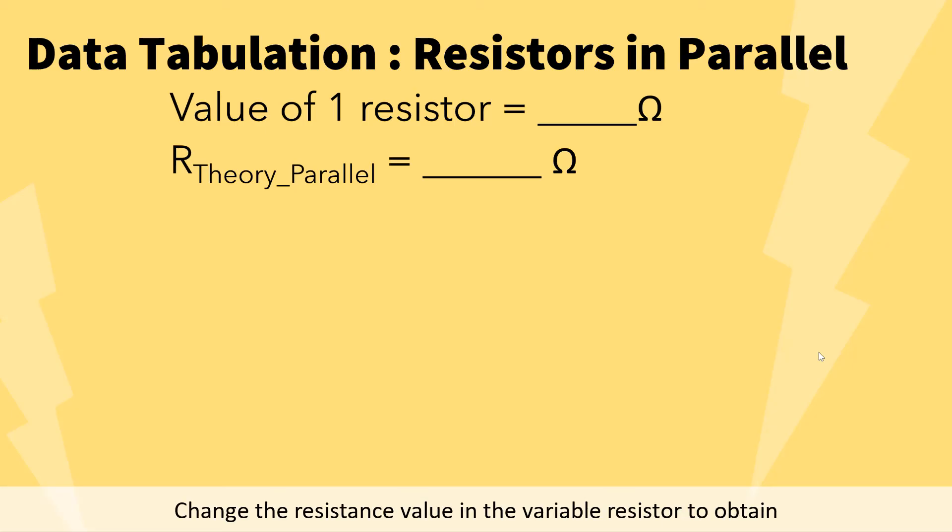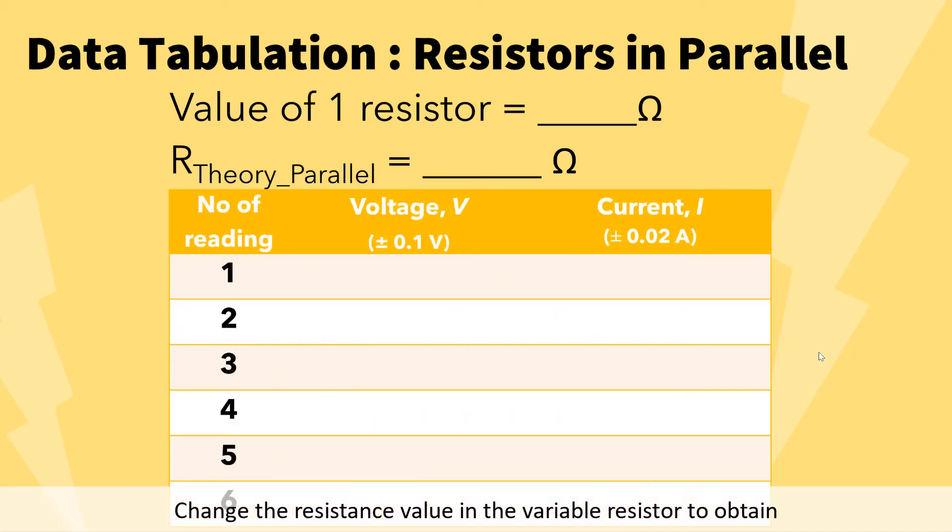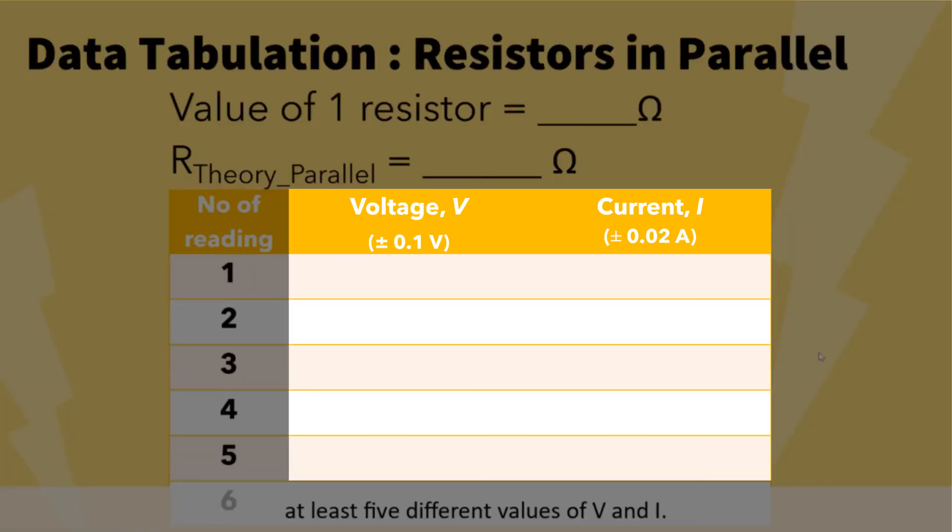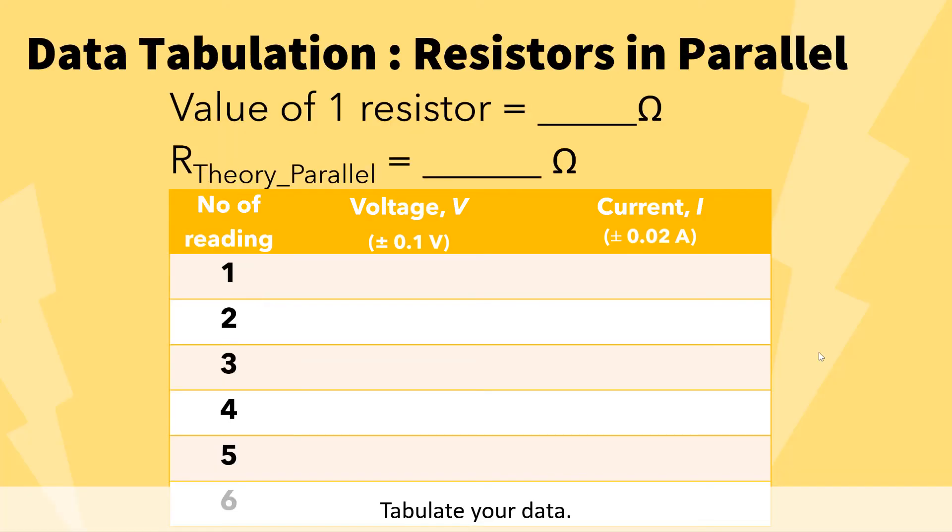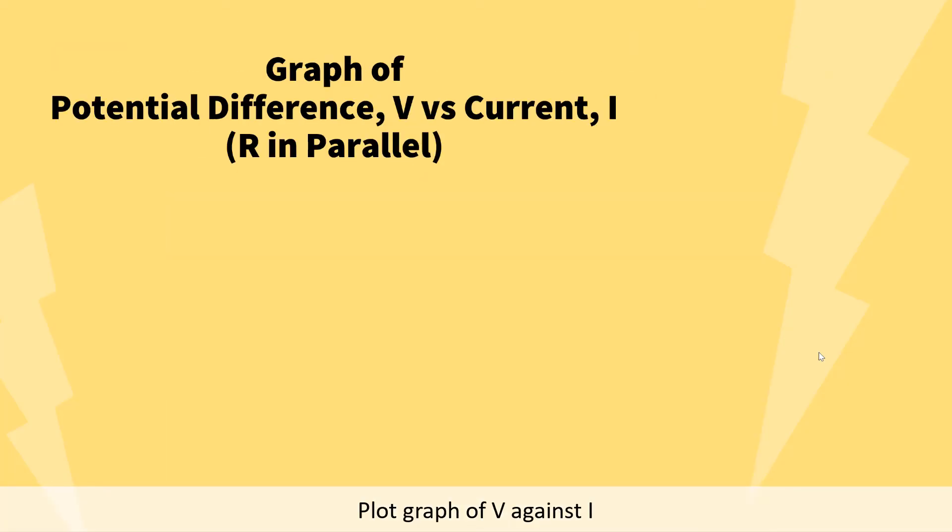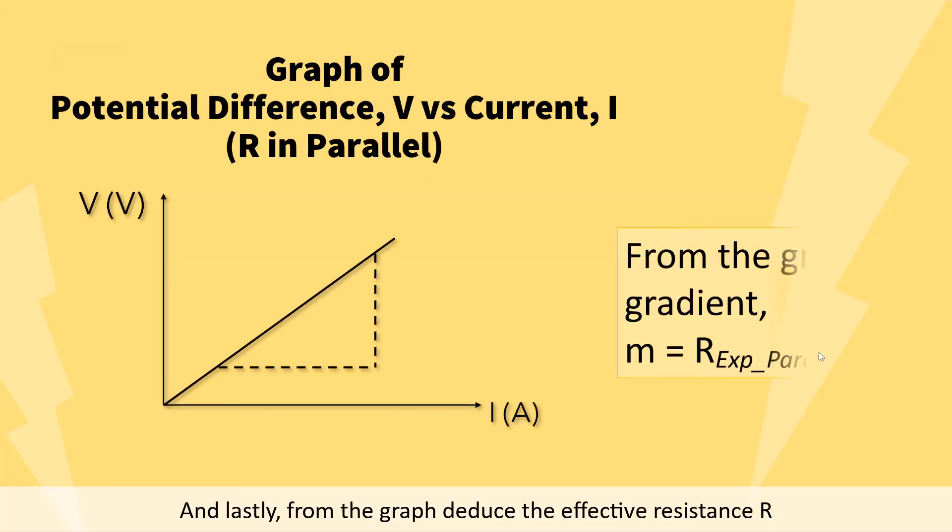Change the resistance value in the variable resistor to obtain at least 5 different values of V and I. Tabulate your data. Plot graph of V against I. And lastly, from the graph, deduce the effective resistance R experiment parallel for the 3 resistors connected in parallel.